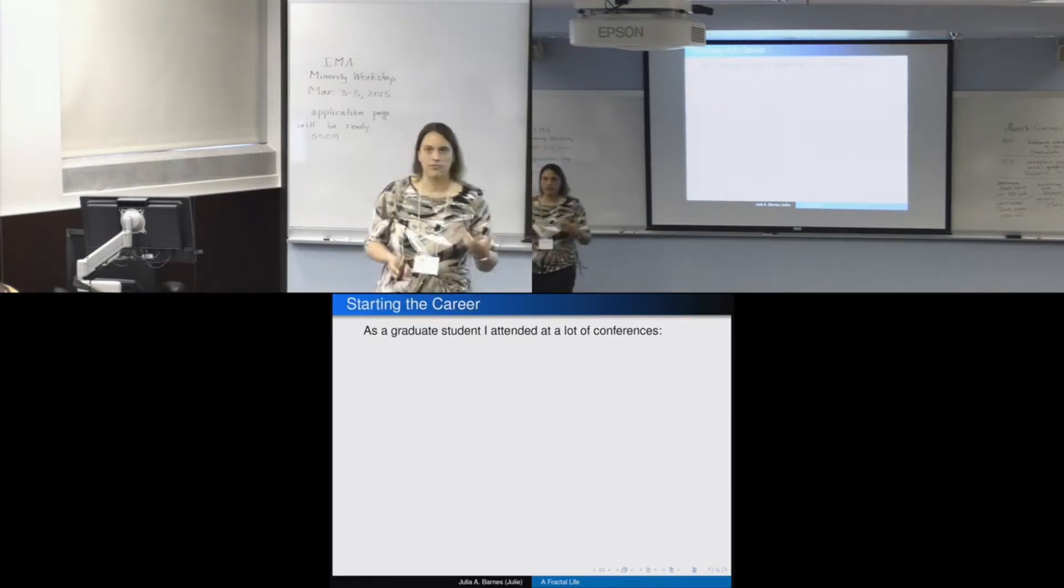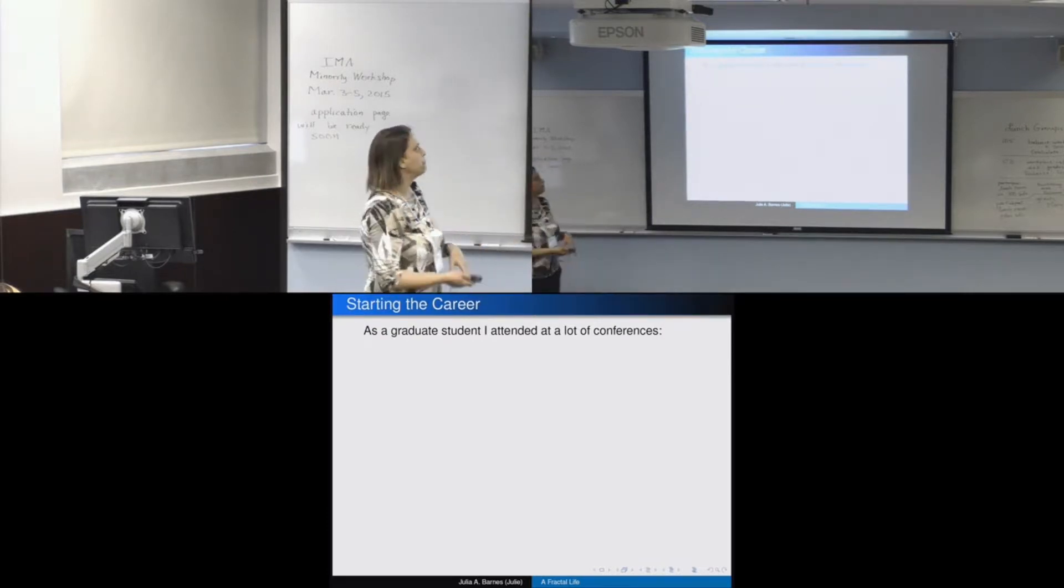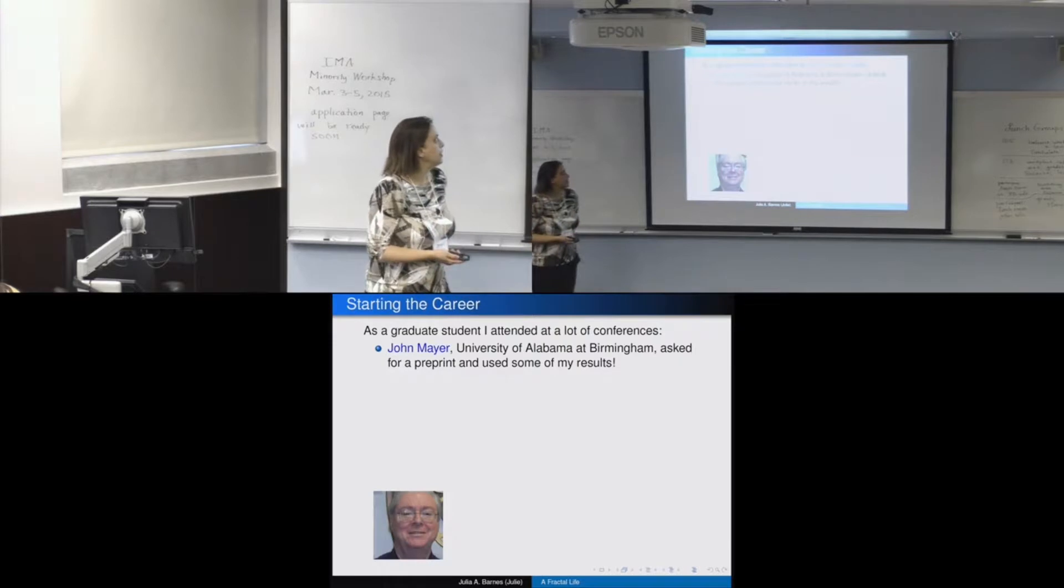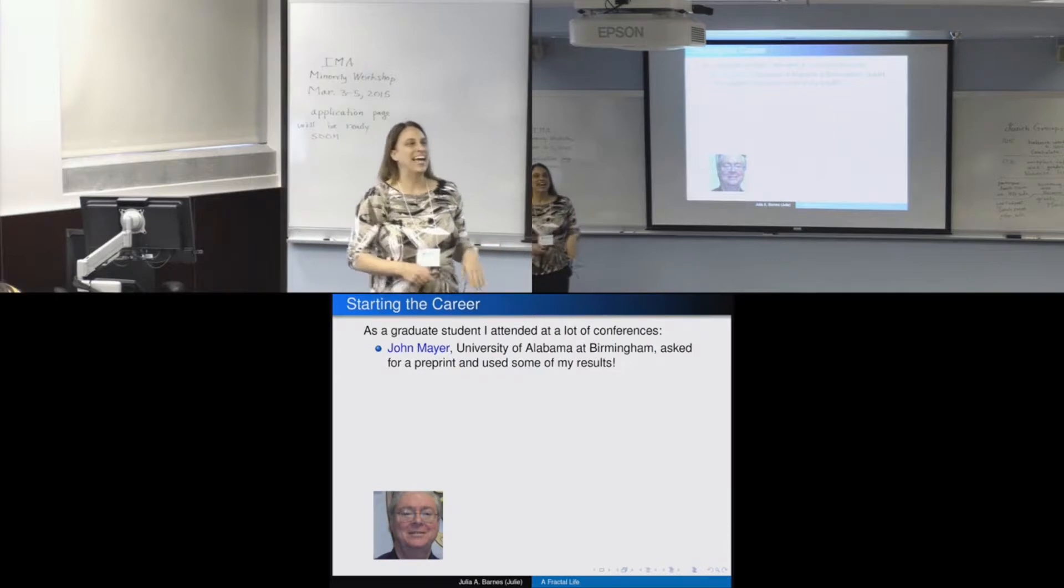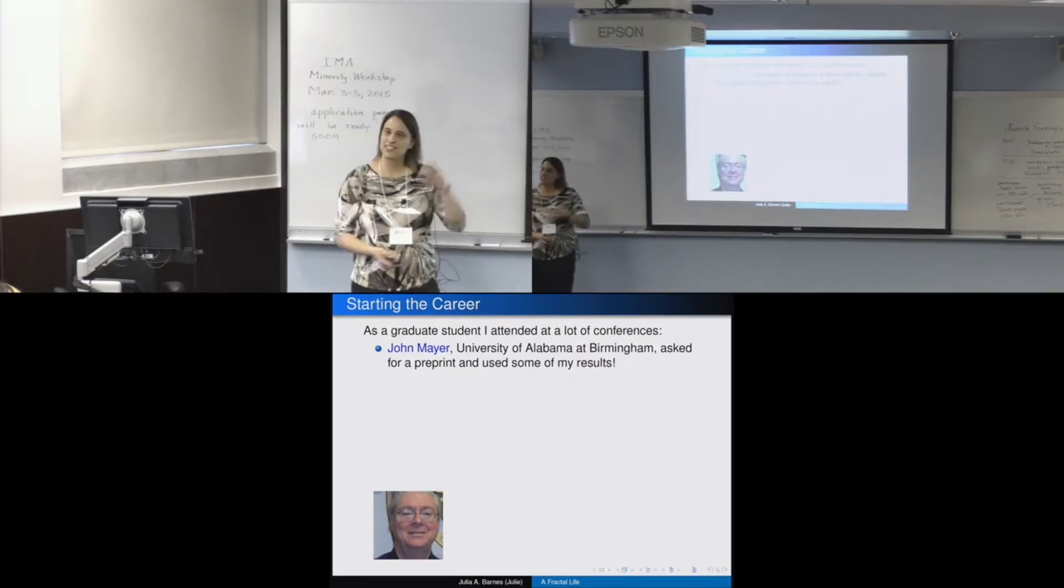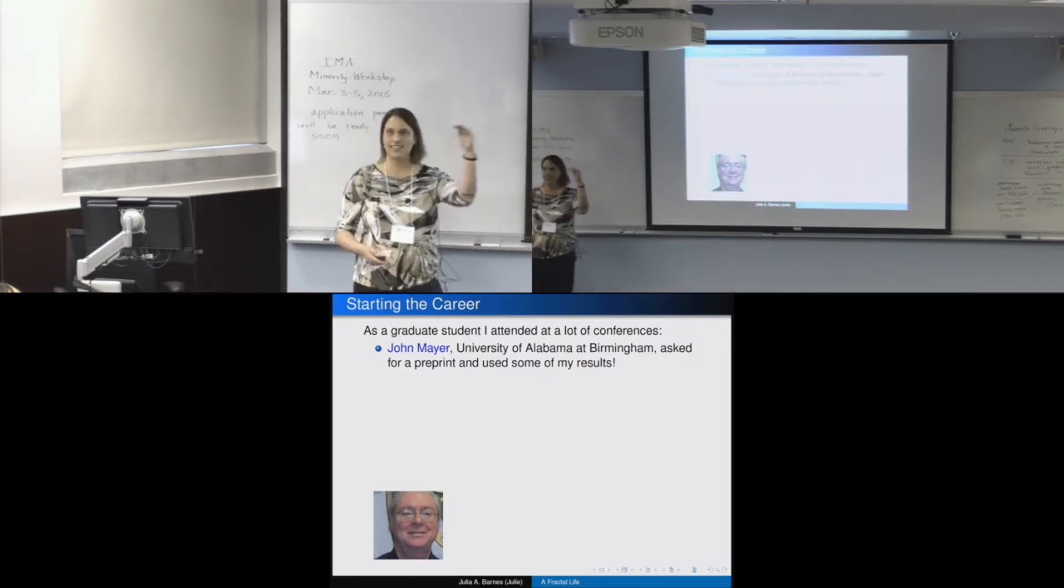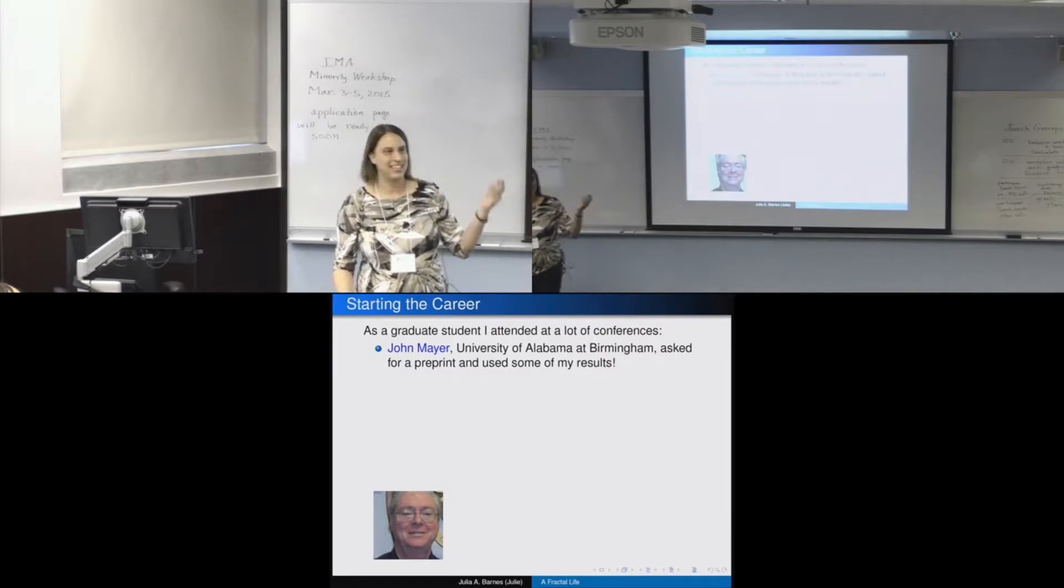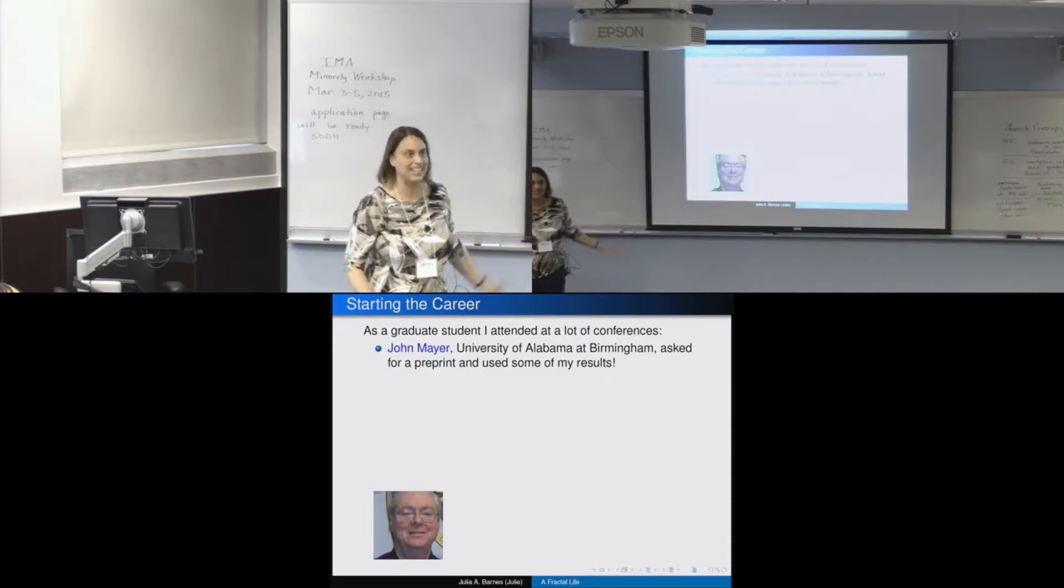So I attended a lot of conferences. And those of you in grad school should be doing that and getting your name out. And several things happened. One was I was giving a talk. And John Meyer, who's at the University of Alabama at Birmingham, asked me for a pre-print. I'm like, oh, great. Somebody actually is interested in my work. This is good. And two years later, actually, I noticed he was in the program at a conference. And I went to his talk. And lo and behold, all these slides had my name on it. He was using my results. And he gave me copies of some papers where he used my results. I'm like, this is amazing.